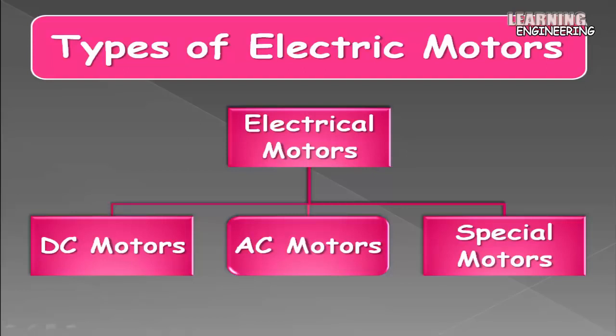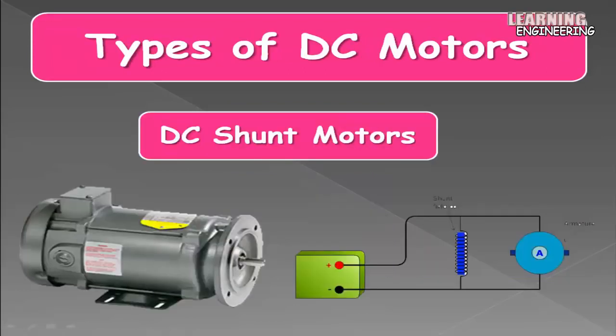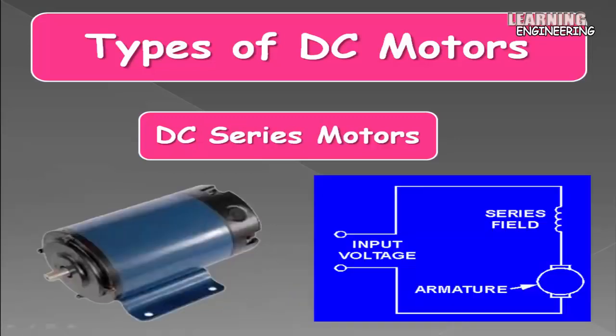Electrical motors are mainly three types: DC motors, AC motors, and special motors. There are four types of DC electric motors. DC shunt motor: a shunt DC motor connects the armature and field windings in parallel, or shunt, with a common DC power source. This type of motor has good speed regulation even as the load varies, but does not have the starting torque of a series DC motor.